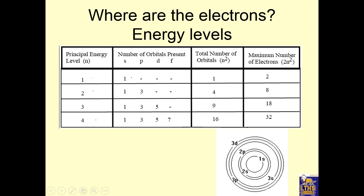The places where you find electrons are probability areas. In the first level, there's only one — it's called an S orbital — so you can put two electrons in the first energy level. The second energy level has S and P sub-orbitals, so two sublevels, four total orbitals for a maximum of eight electrons. The third energy level has three sublevels, nine orbitals, and 18 electrons max. The fourth energy level has four sublevels, 16 orbitals, and 32 electrons max.